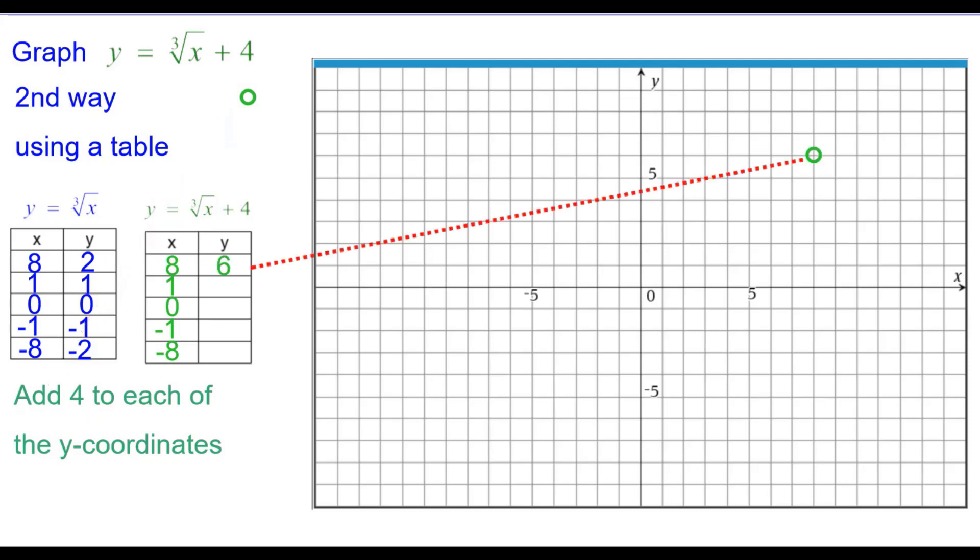So we'll plot the point. 1 plus 4 is 5, (1, 5). 0 plus 4 is 4, (0, 4). Negative 1 plus 4 is 3, so (-1, 3). And negative 2 plus 4 is 2, so (-8, 2).